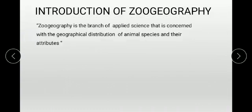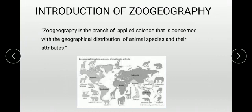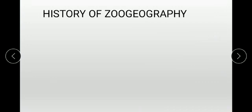First of all, we discuss the introduction of zoo geography. Zoo geography is a branch of applied science that is concerned with the geographical distribution of animal species and their attributes. As the name shows: zoo means animal, geo means earth, and graphy means distribution. So zoo geography is the distribution of animals on the earth — their habitats, their location, the region in which they live — all are discussed in this branch of science.